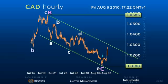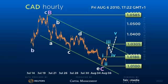As such, minor 101.80 should now hold for an initial test of down channel resistance at 103.05, and ideally a break up to the previous corrective high at 103.90.